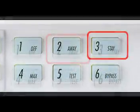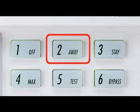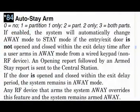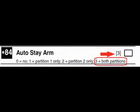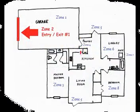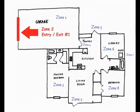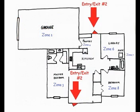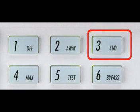We will either arm in stay or away mode. Without some background knowledge, the first command — field 84, auto stay — can seem somewhat confusing. The factory default for this command has both partitions set to on. Here's how it works: if you arm your panel as away and the panel sees that you have not opened either entry exit number one or entry exit number two, it assumes you're staying in the house and will automatically switch over to arming stay instead of away.